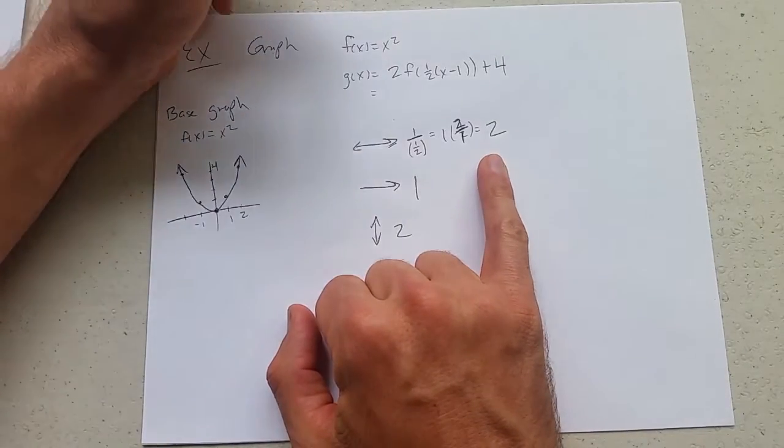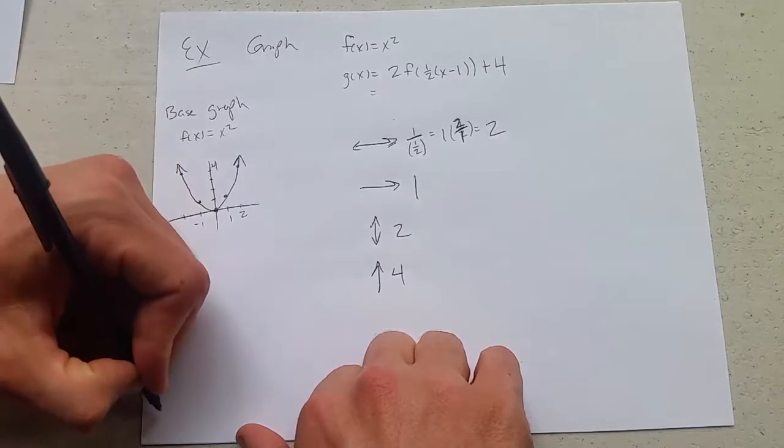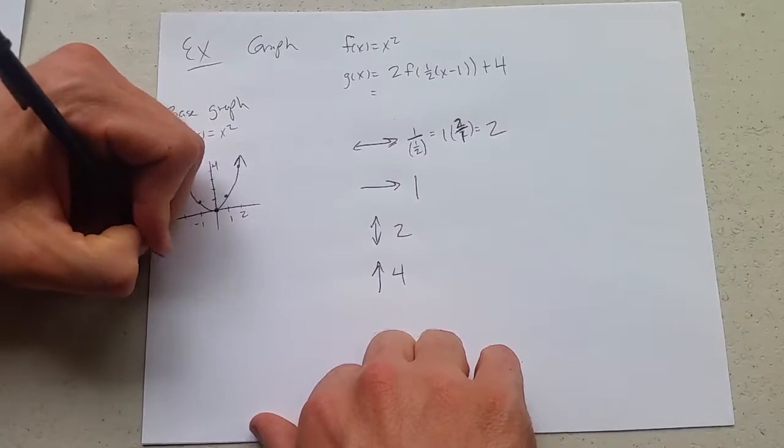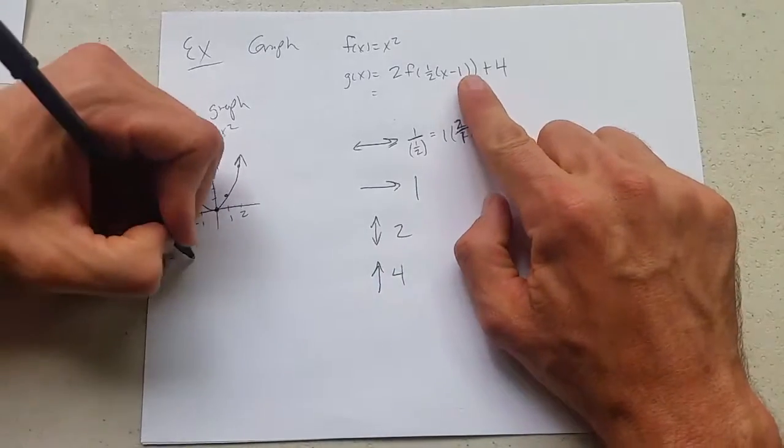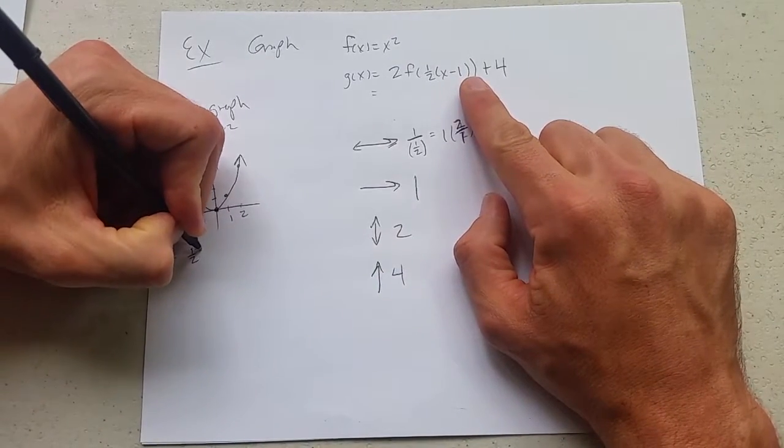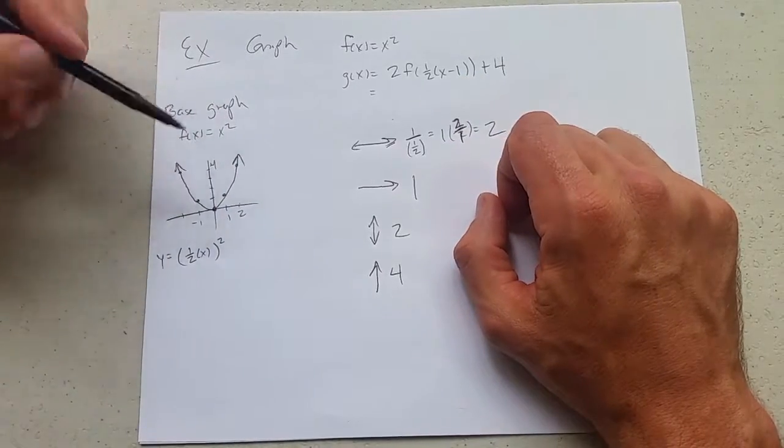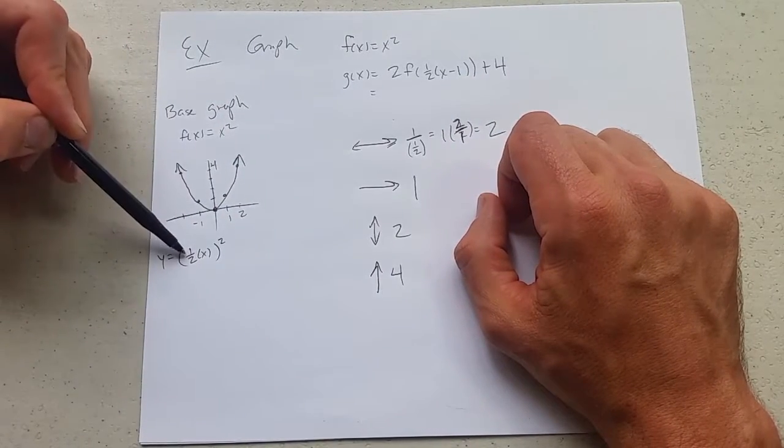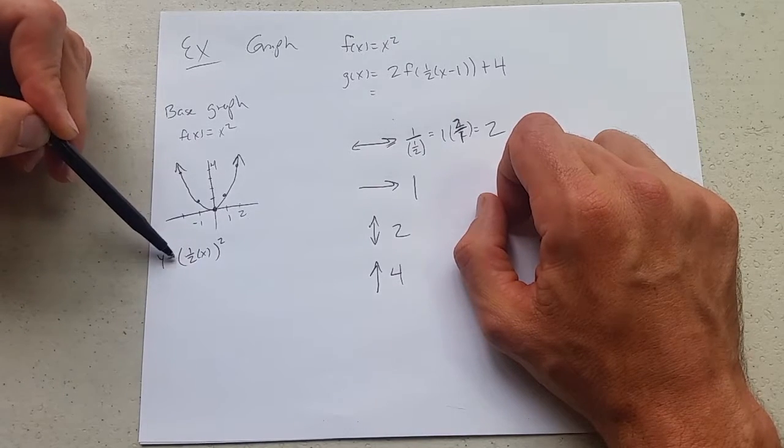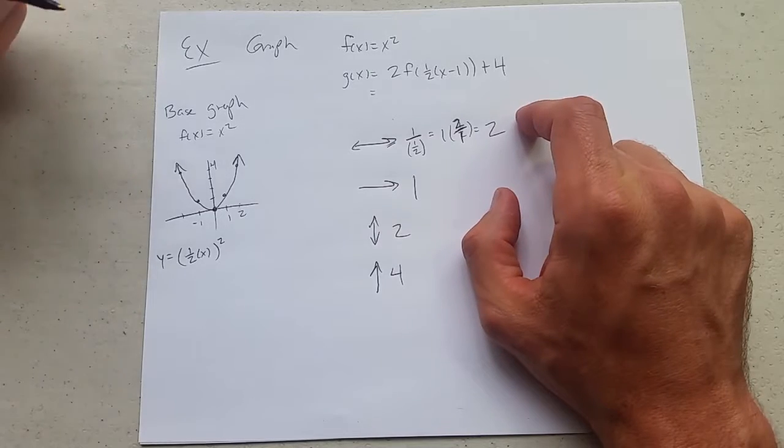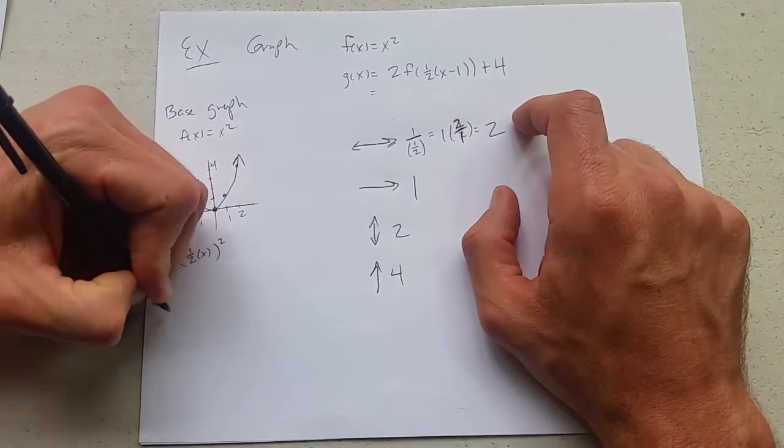So first up we have this half, and I'm going to leave out everything else, just apply the one half. Now I wrote it inside the parentheses because if I wrote it outside, this would be a vertical stretch and I want a horizontal. So this is a stretch of two.